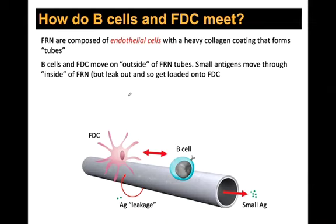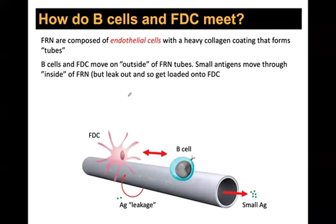Student question: Are all lymph nodes the same size, and does the 36-hour transit time apply to all? Answer: Lymph nodes vary in size — inguinal lymph nodes are fairly large, while sub-cervical lymph nodes under the chin are much smaller but more numerous. The 36-hour figure is a general statement for a typical lymph node.